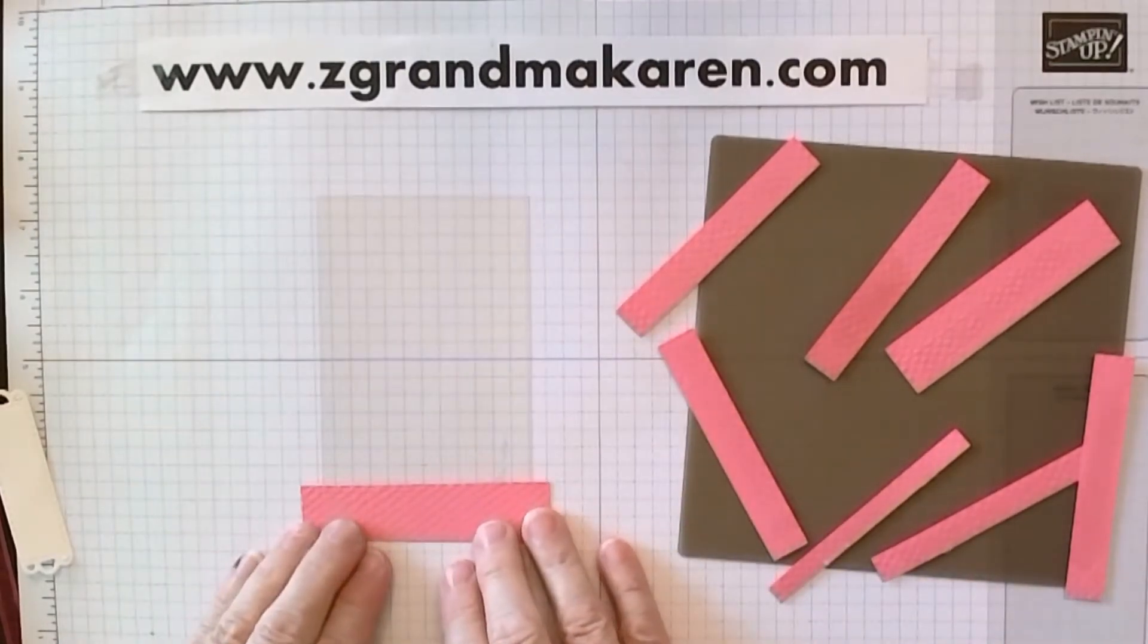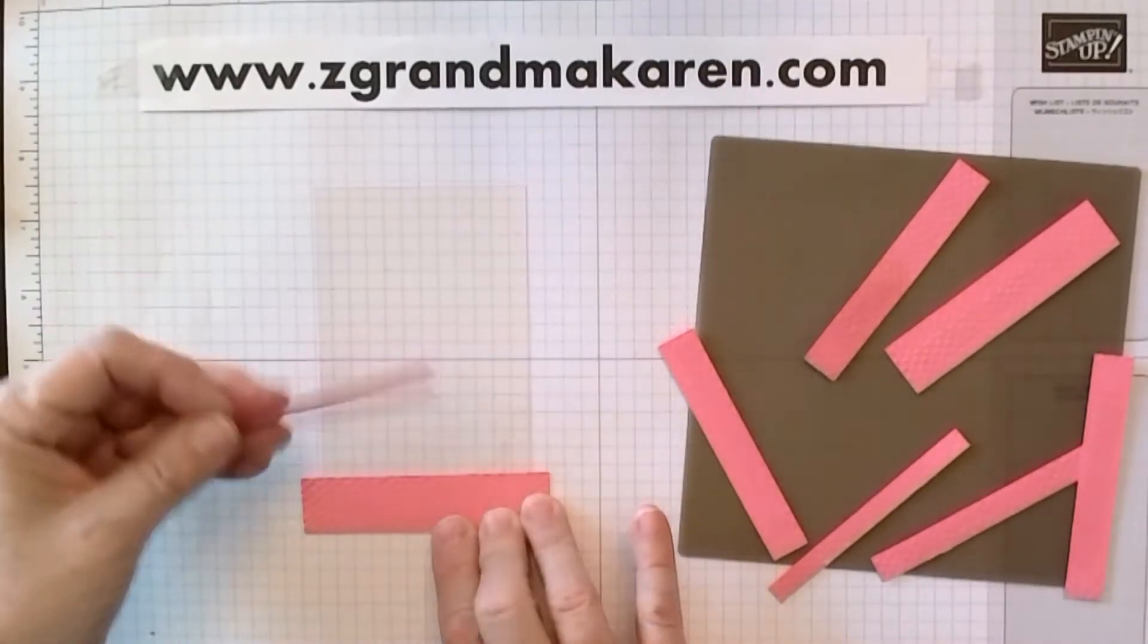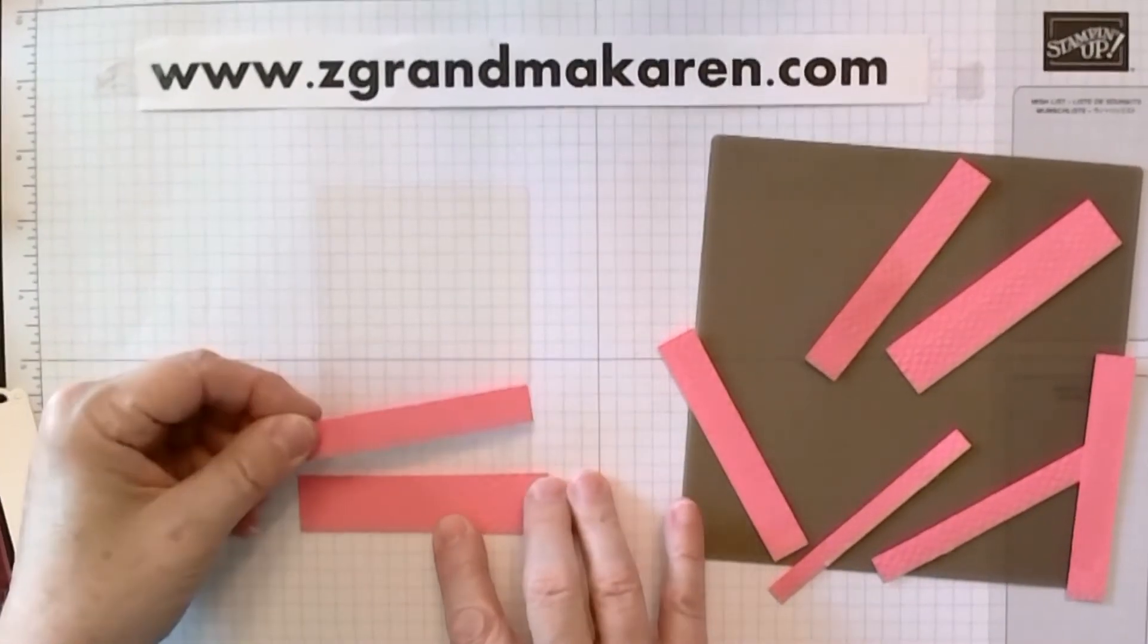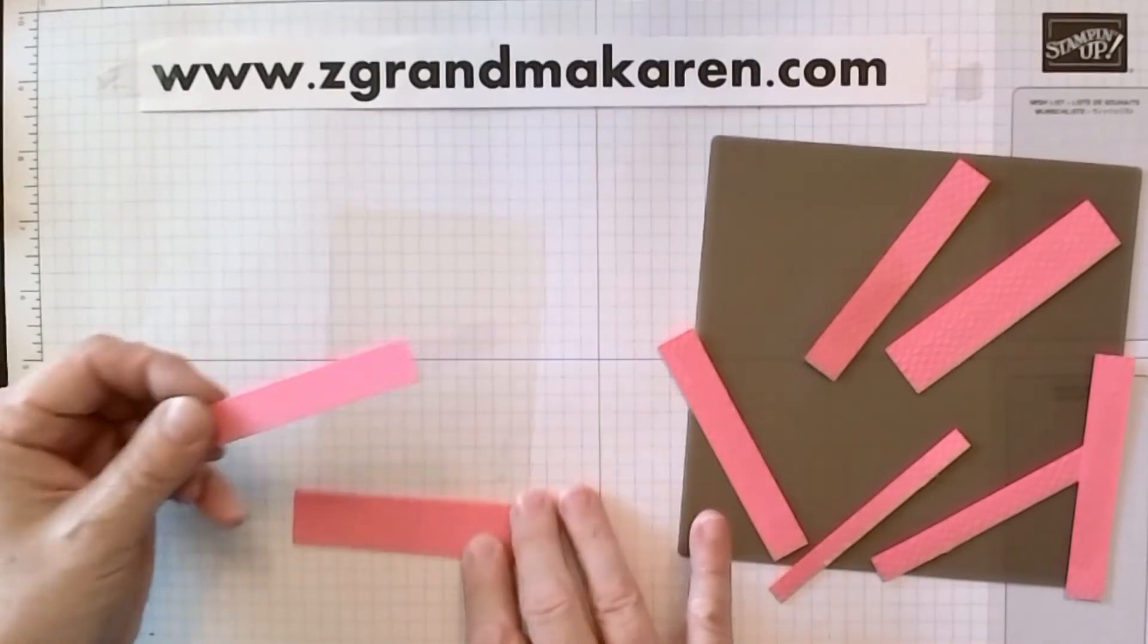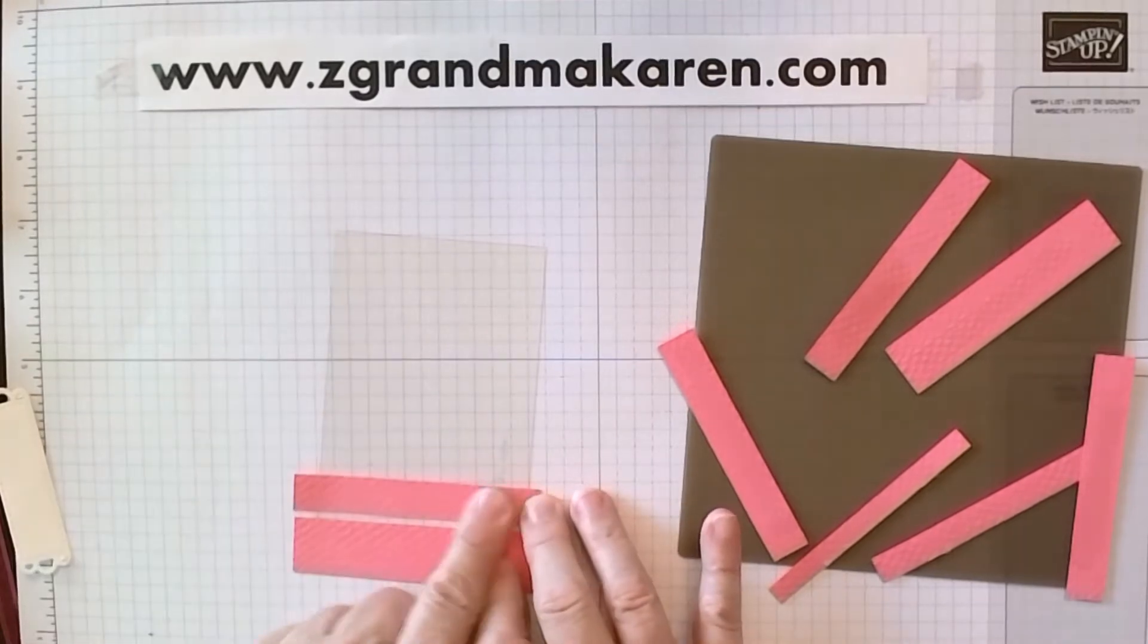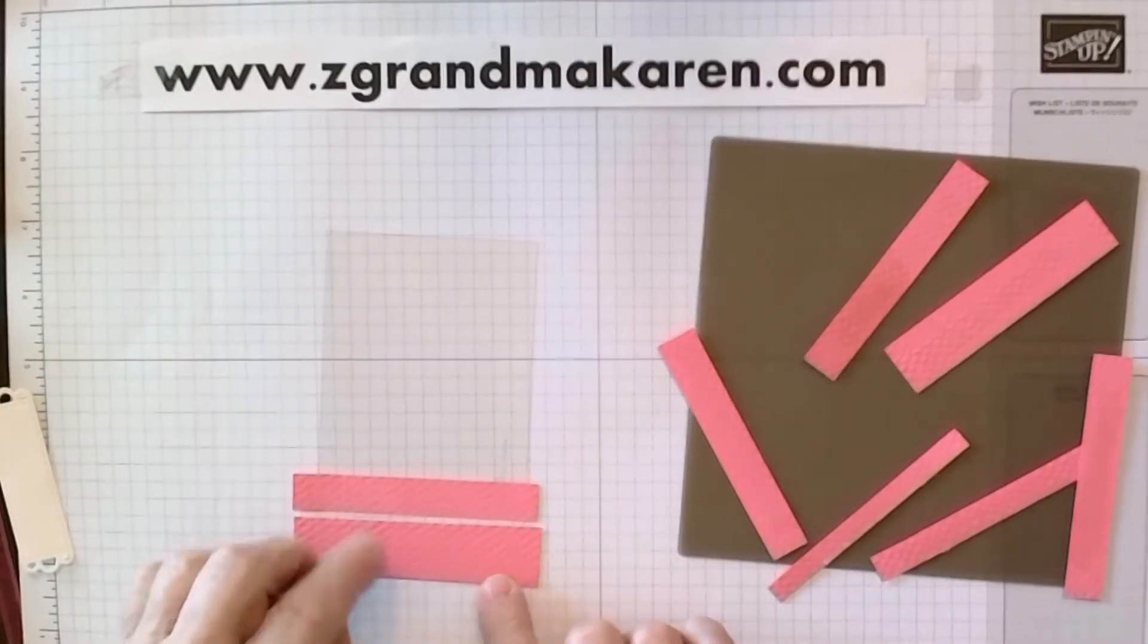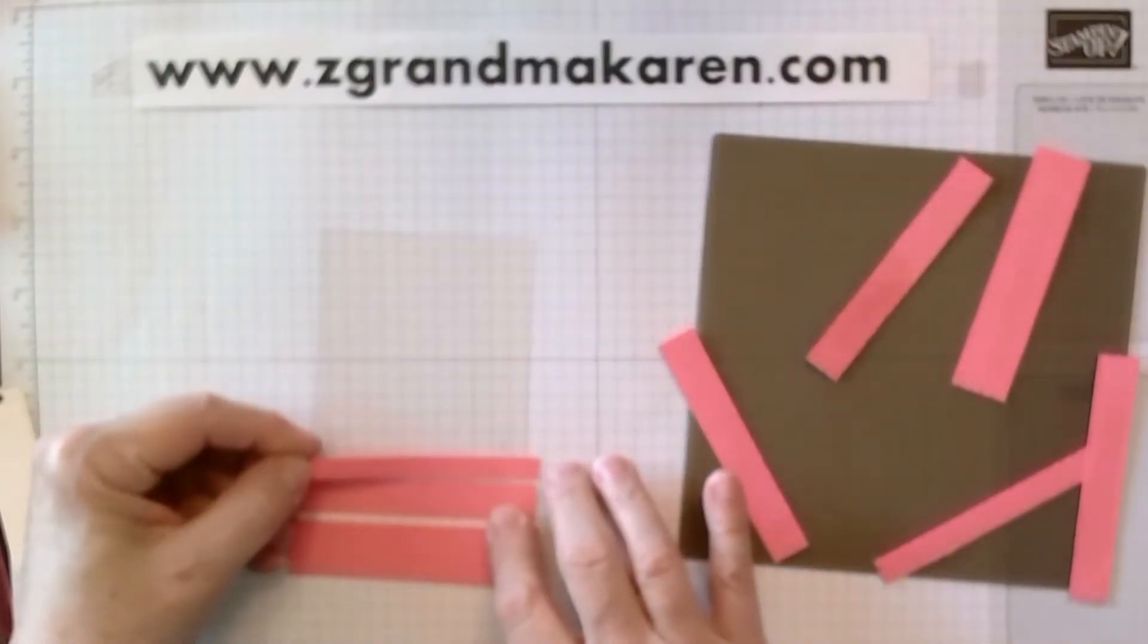That way you have a straight bottom and you have a straight start to your strips. Now, if you use grid paper, you can easily just then line the next one up to one of the grids. And that way you'll be assured that they're straight. So then you just go from the bottom up, different sizes, just stick them on there.